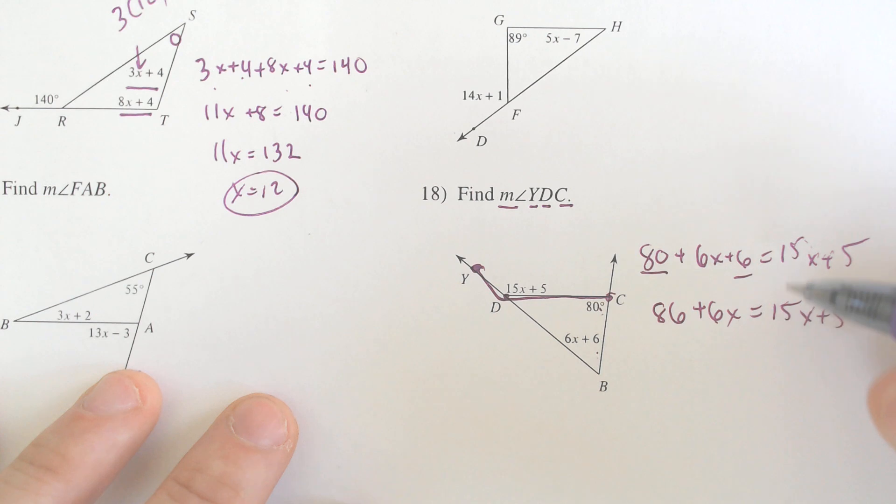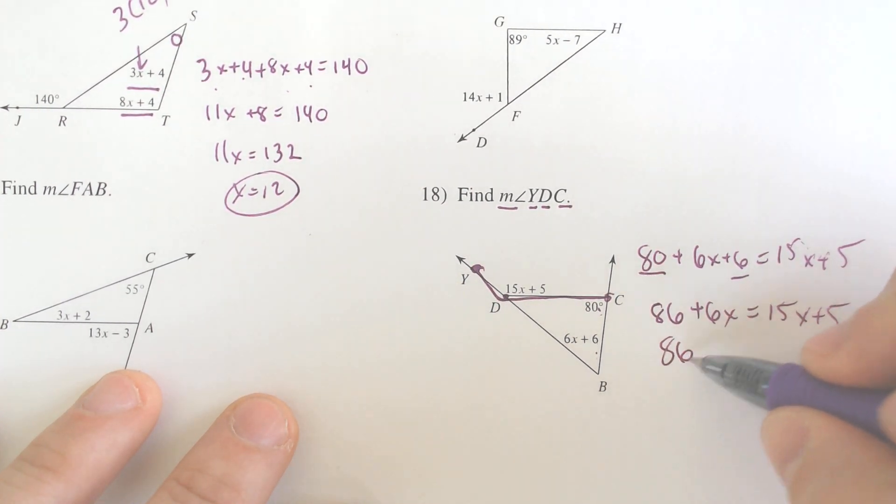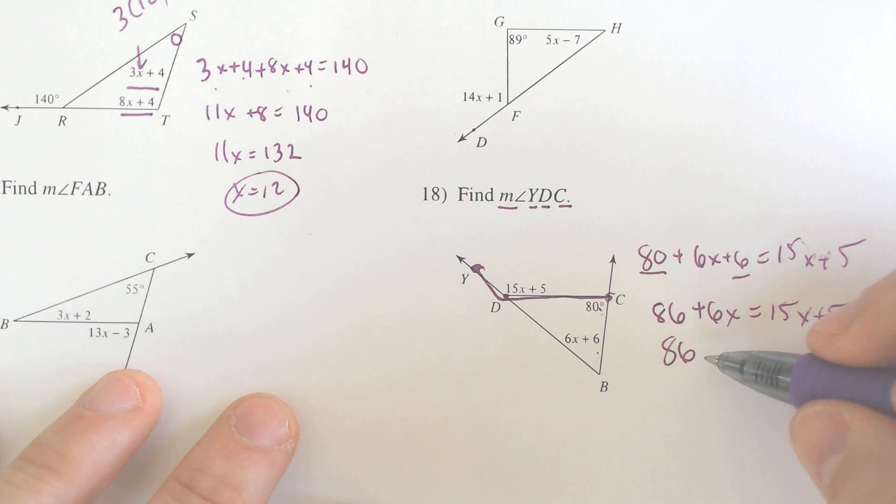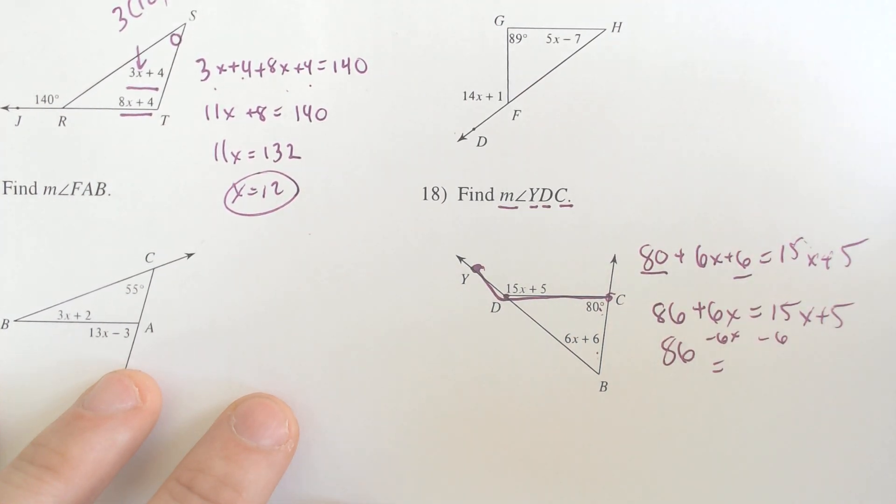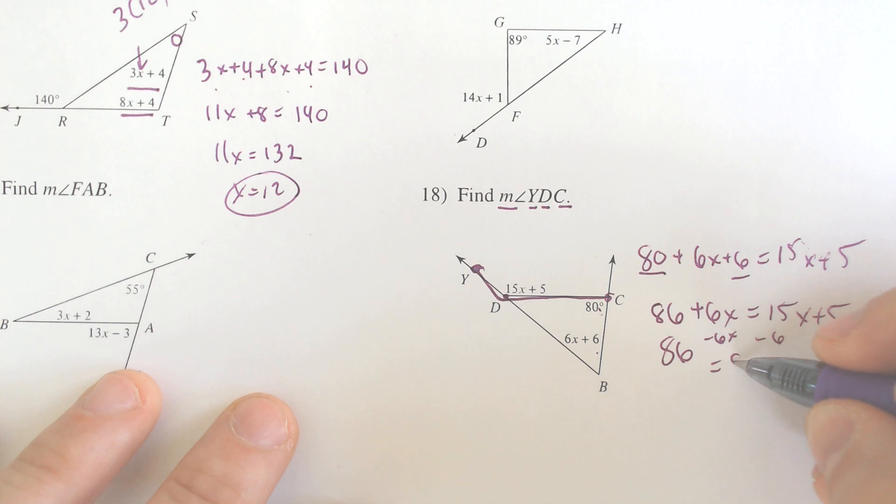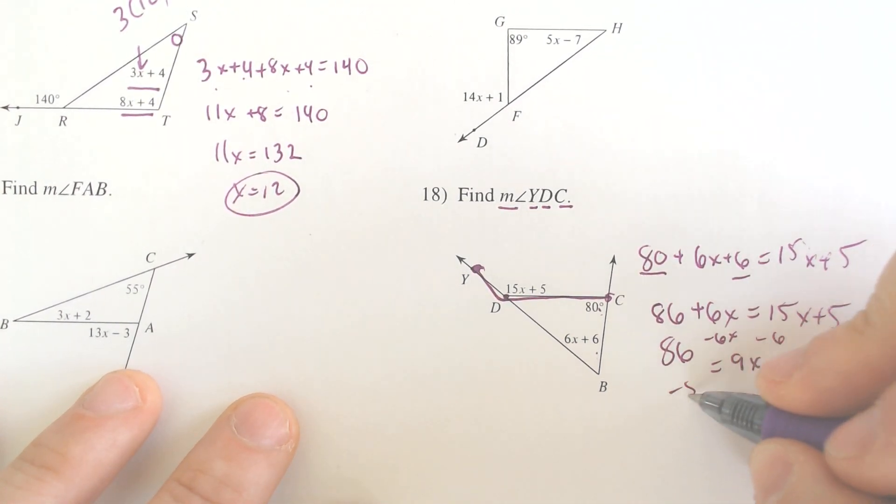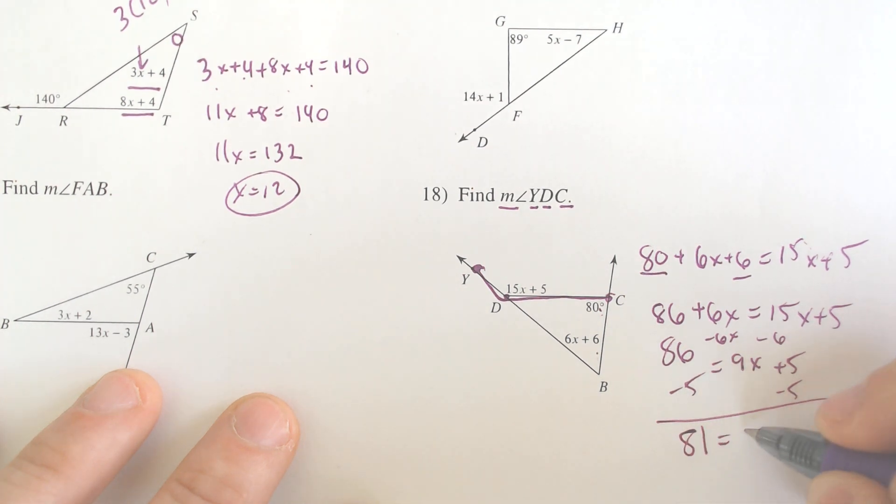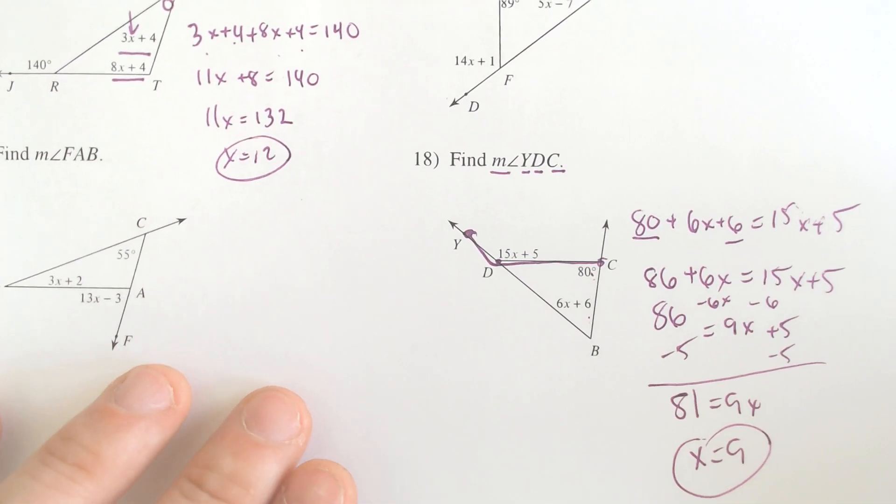Move some things around. We got to subtract the 6x over. So if we subtract the 6x over, you get 86. You could also subtract the 15, but I would prefer to subtract the 6x because 15 can actually subtract 6 and you get 9x plus 5. Subtract the 5, minus 5, minus 5. 81 would equal 9x. You're almost done. You get x equals 9 because you divide by 9.